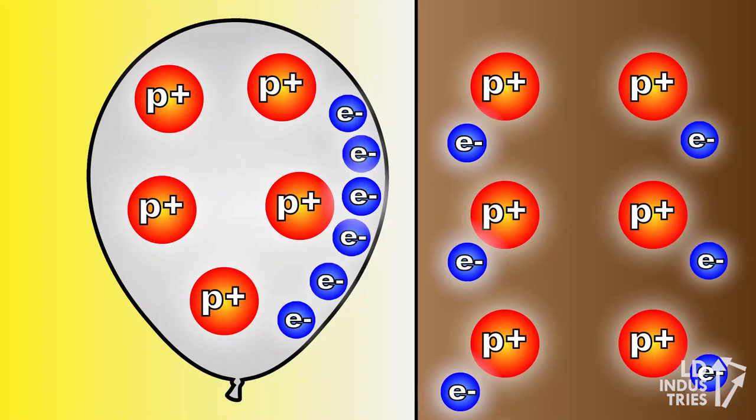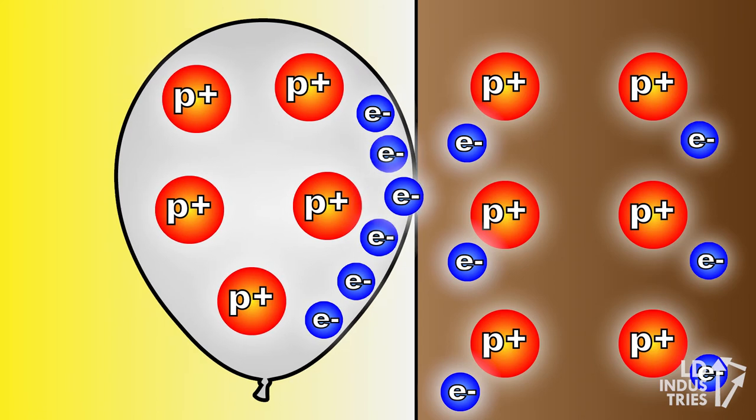But what about the balloon and the wall? Here we have that negatively charged balloon from the original experiment, and I was able to stick it to the wall — but the wall is neutrally charged. So why do negatives become attracted to neutral objects? Conduction is clearly taking place because the wall and the balloon are touching, but that would mean both the wall and the balloon are negatively charged. So why are they attracted?